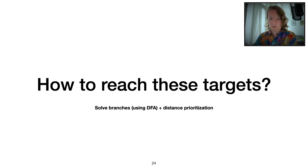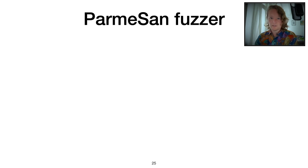We make use of dynamic data flow analysis so that we actually know which input bytes correspond to flipping a certain branch. And then we add our distance calculation. We can prioritize branches based on the distance to our targets.